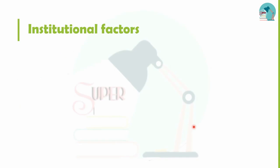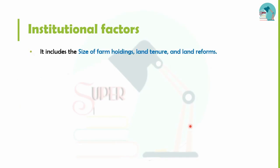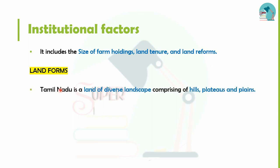Next is the institutional factor. The institutional factor covers the size of the farm holding, land tenure, and land reforms. In Tamil Nadu, there are different landforms — hills, plateau, plains, etc.